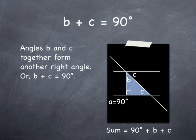We can see from the diagram that if we add up angles B and C, we get 90 degrees.